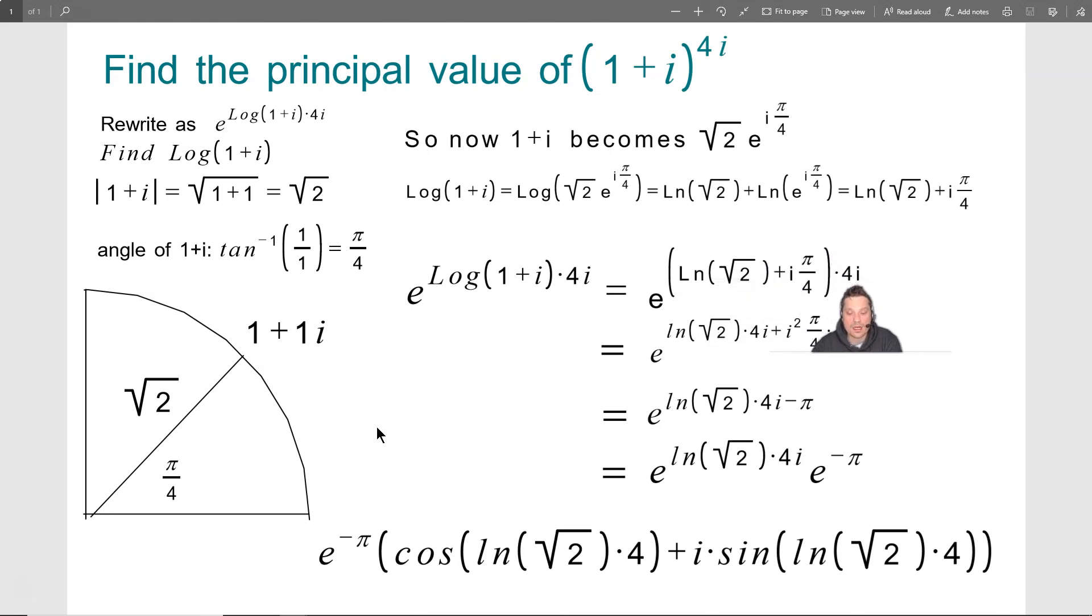Now I'm going to take this 4i, I'm going to distribute it to the i pi over 4, and I'm going to distribute it to the ln of the root of 2 individually, that's going to give me e to the ln of the root of 2 times 4i plus, let's be careful of that second part. So you're going to have the i from here times the i from here, that's going to give me i squared. I'm going to have pi over 4 times the 4.